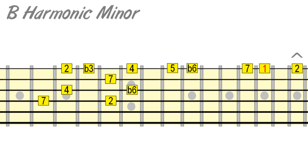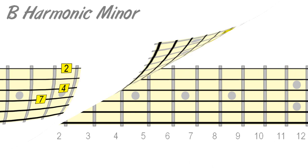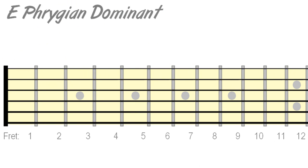Combine these horizontal single string movements with runs and licks that you already know. For example, here's a combo in E Phrygian Dominant, or A Harmonic Minor, whichever way you look at it.